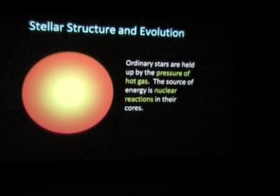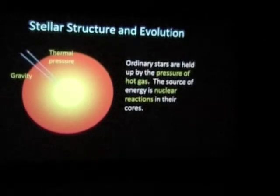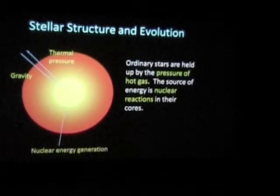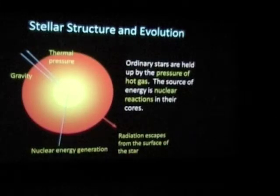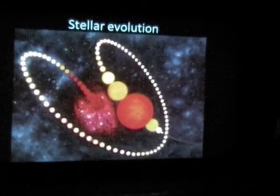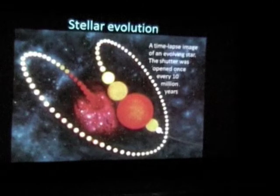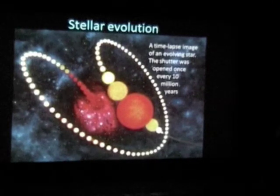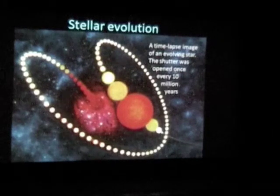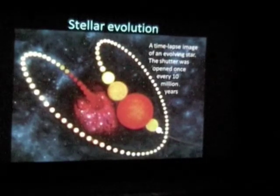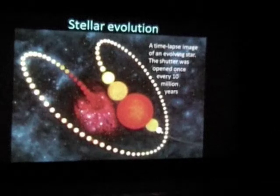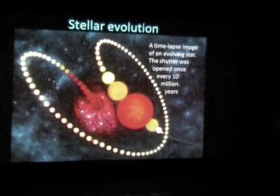Here is how ordinary stars work. We've got the energy generation in the core of the star, and a beautiful balance between gravity and the thermal pressure gradients. The energy degrades somewhat on the way out, and then the light that comes through the surface of the star is what we see from the sun, for example. Here is the whole of stellar evolution on one slide — a time-lapse image of an evolving star with a shutter being opened every 10 million years. We start forming the stars in the center, in a dust cloud, and then the star settles down to something like our own sun for a very long time. And then when the central core runs out of energy, it collapses.